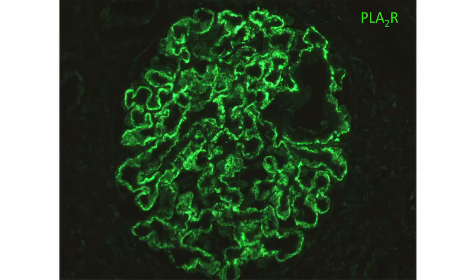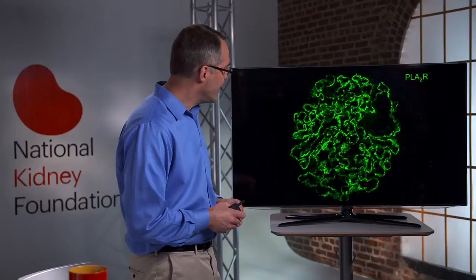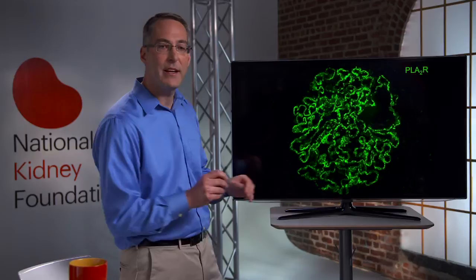This is an immunofluorescent image for PLA2R, and it looks identical to what we've seen for IgG or C3. Again, the antigen is in these deposits decorating the capillary loops. All of these elements — the PLA2R, the IgG, the complement factor C3 — are within these finely granular deposits that decorate the glomerulus.